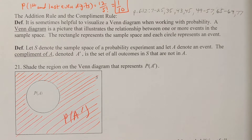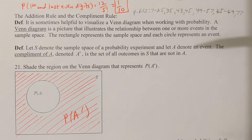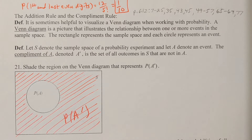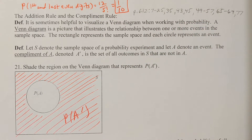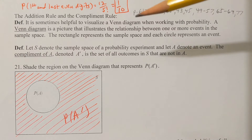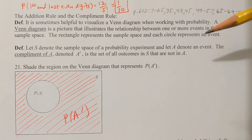A definition: it's sometimes helpful to visualize a Venn diagram when working with probability. We've worked with Venn diagrams before, so I've taken the same definition and applied it to this chapter. A Venn diagram is a picture that illustrates the relationship between one or more events in the sample space. The rectangle represents the sample space and each circle represents an event.